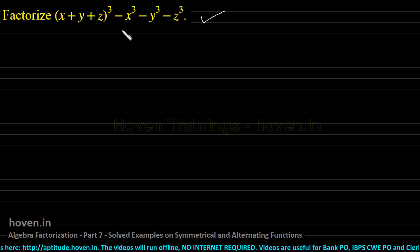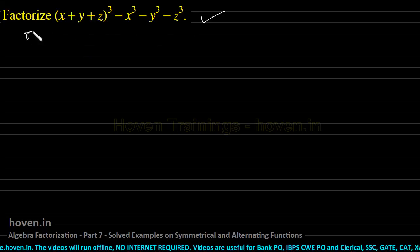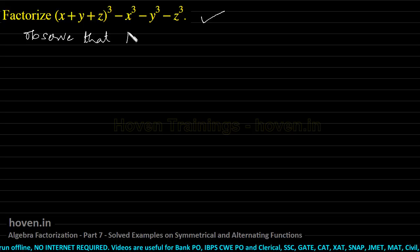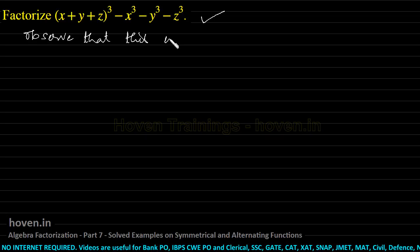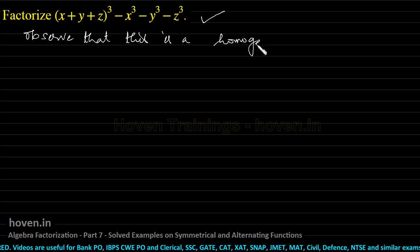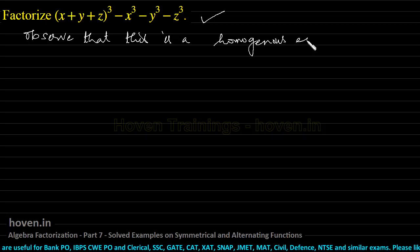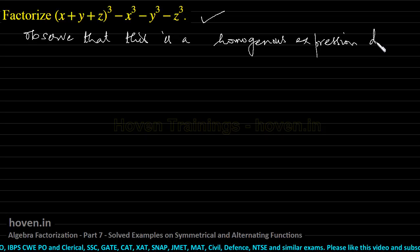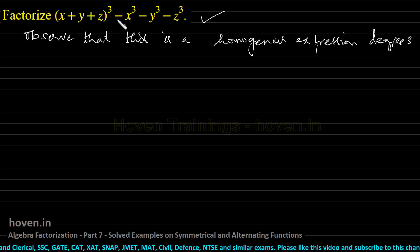So we have to factorize this. First of all, we observe that this is a homogeneous expression of degree 3. We observe that all the terms are of degree 3.